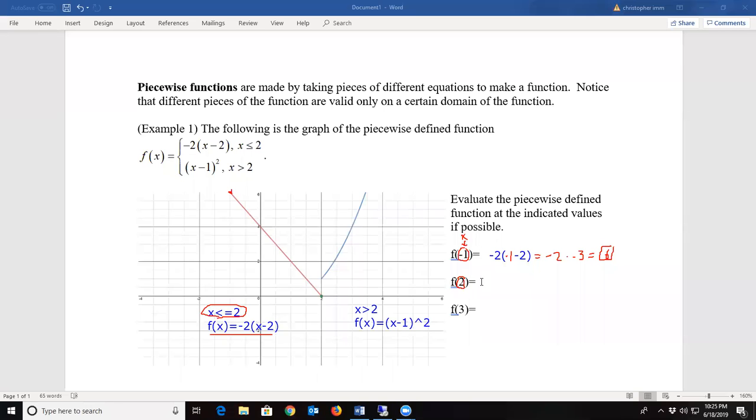Here I have negative 2 times I plug in my 2 minus 2, which is equal to negative 2 times 0, which is equal to 0.